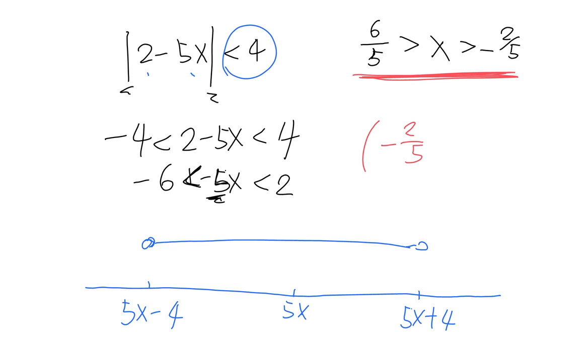So it's negative 2 over 5 to 6 over 5. This is the answer to this question.